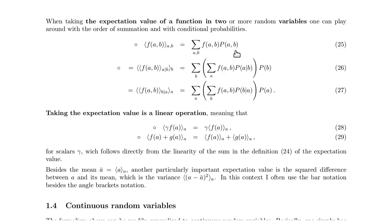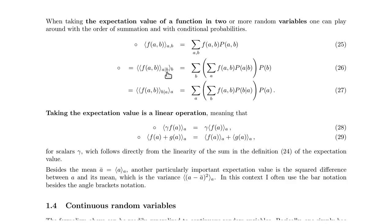We can split P of A, B into P of A given B times P of B. Then we rearrange the sums: since P of B does not depend on A, we take it out of the sum over A. So we have an inner sum over A of f(A, B) times P(A given B), and then an outer average over B. In shorter notation, this is the inner average over A given B, then the outer average over B. Similarly, we can write P(A, B) as P(B given A) times P(A), giving an inner sum over B and outer sum over A.